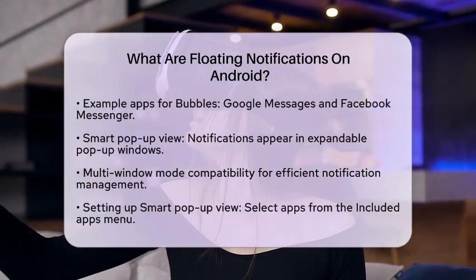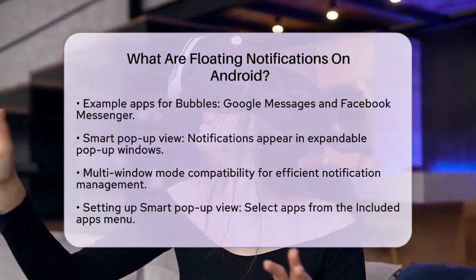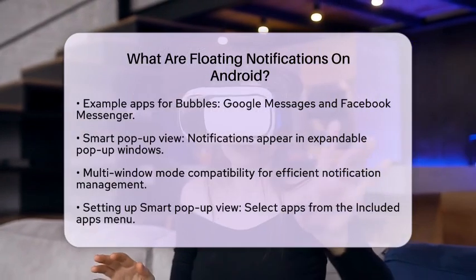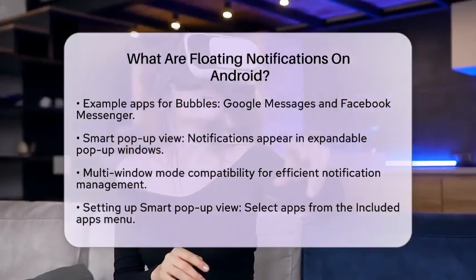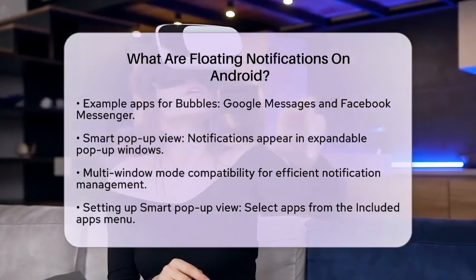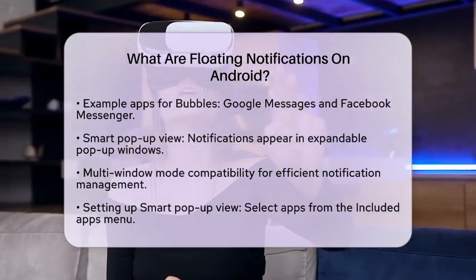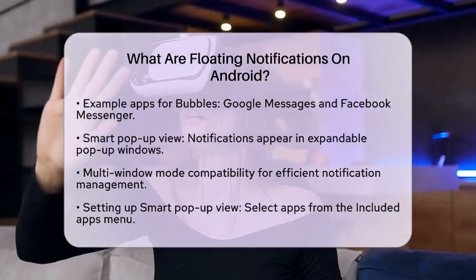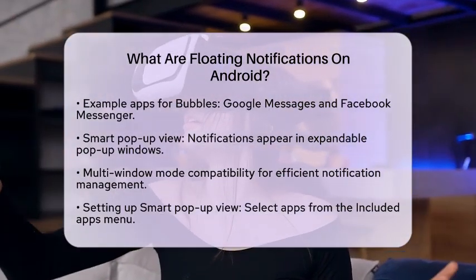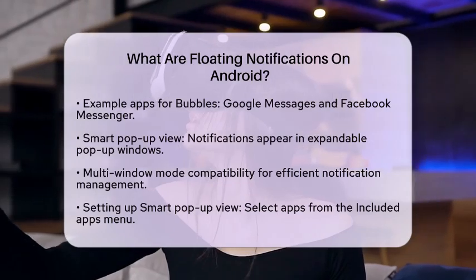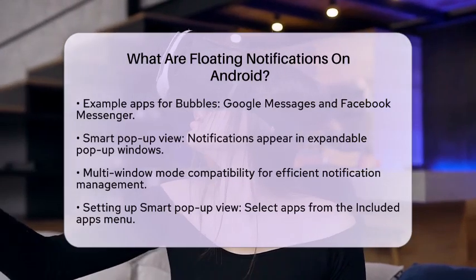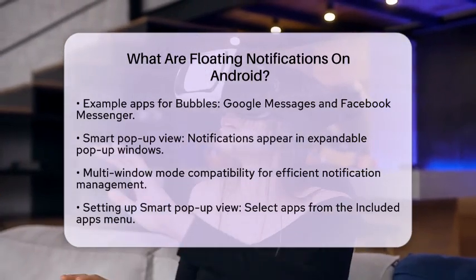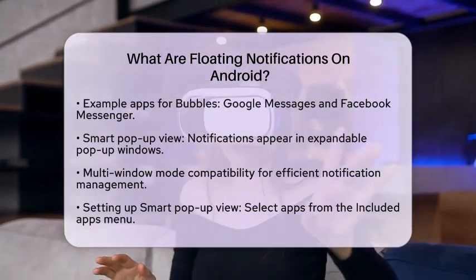To set up Smart Pop-up View, after selecting it in the Floating Notifications menu, you'll need to choose which apps will use this feature. Simply tap on Included Apps and select the apps you want to receive notifications from in this format.